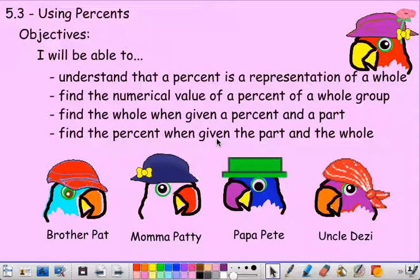Or you can work it backwards. So if you know your percentage and you know how many questions there were on the test, you can figure out how many you got right or how many points you got. If you know how many points you got and you know your percentage, you can also find the total number of points on the test. So we can really take these pieces and work them together in different ways to find different parts of information.